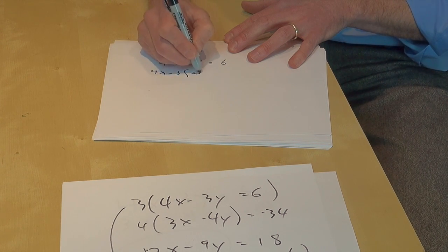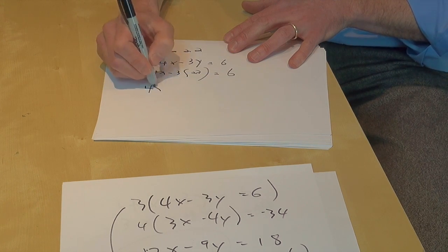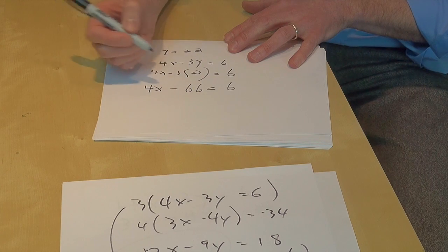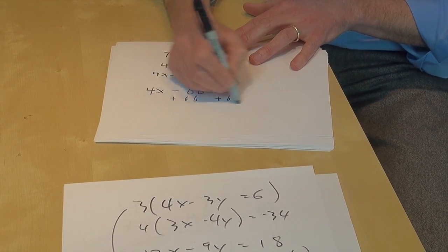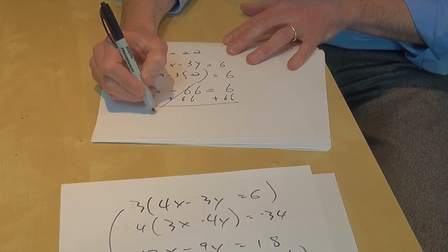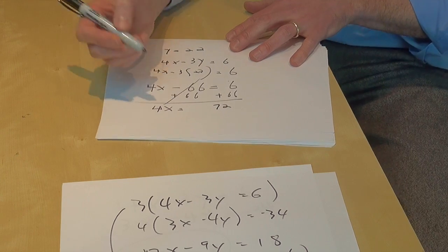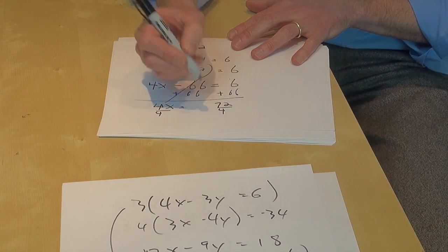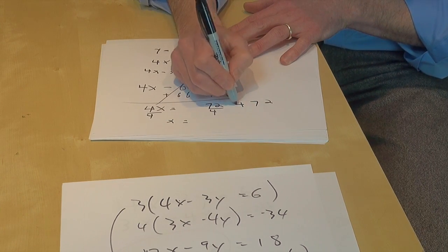4x minus 3 times 22 for y equals 6. 4x minus 66 equals 6. Still with me? Add 66 to both sides. Getting closer, I swear. 4x equals 72.